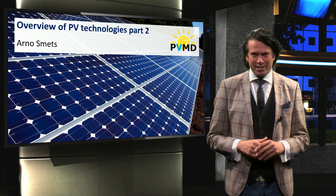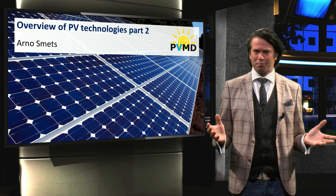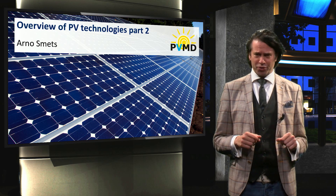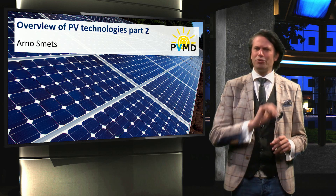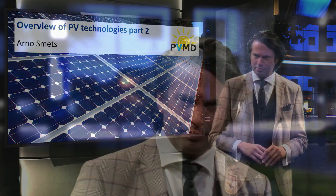In the previous video we started our discussion of the different PV technologies. We discussed the abundance of the elements used for crystalline silicon and the record efficiencies. Now let's continue with the thin film technologies. Thin film solar cells are made from films that are much thinner than the wafers that form the base for the first generation photovoltaics, and therefore use much less material.